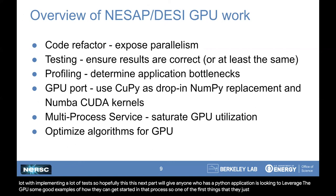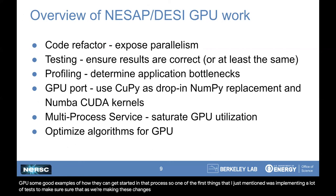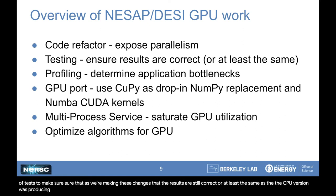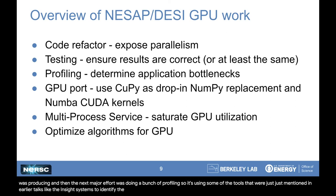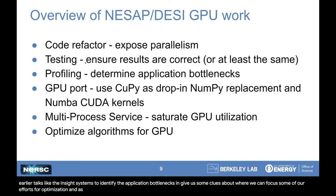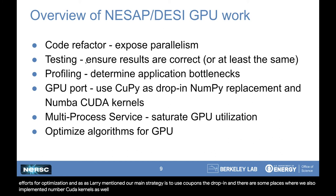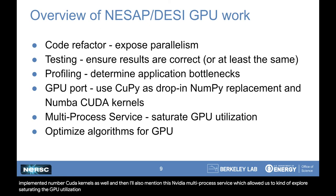One of the first things was implementing a lot of tests to make sure that as we're making these changes the results are still correct, or at least the same as the CPU version was producing. The next major effort was doing a bunch of profiling, using some of the tools mentioned in earlier talks — like the Insight Systems tools — to identify the application bottlenecks and give us some clues about where we can focus our optimization efforts. Our main strategy is to use CuPy as a drop-in replacement for NumPy, and there are some places where we also implemented Numba CUDA kernels. I'll also mention the NVIDIA Multi-Process Service, which allowed us to explore saturating the GPU utilization.